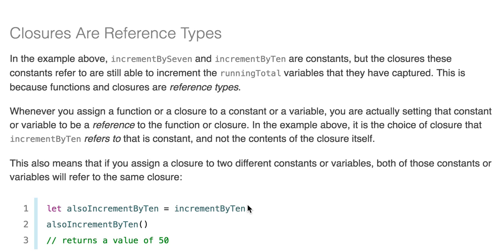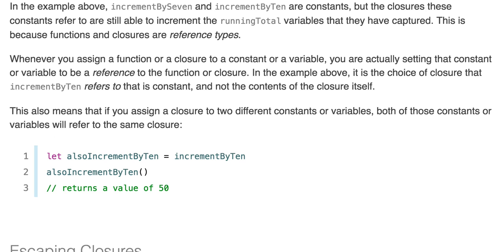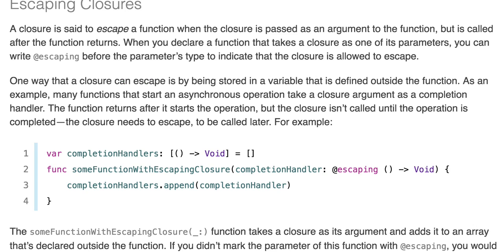That also means if you assign a closure to two different constants or variables, both of those constants or variables will refer to the same closure. So if you do let alsoIncrementByTen = incrementByTen, calling alsoIncrementByTen() will return a value of 50 because it refers to the same location.